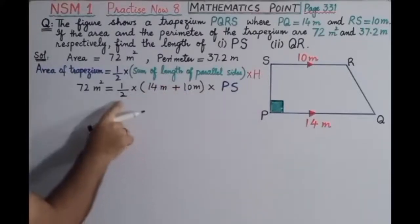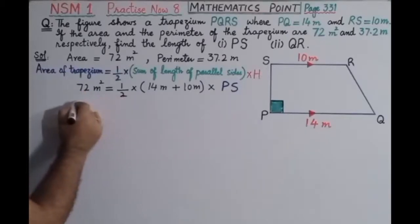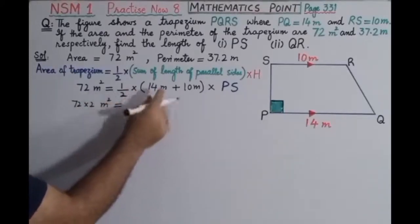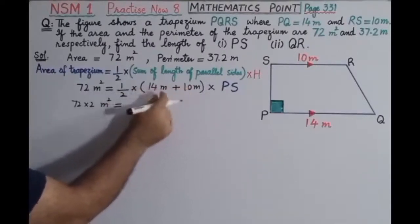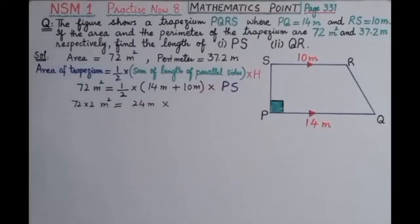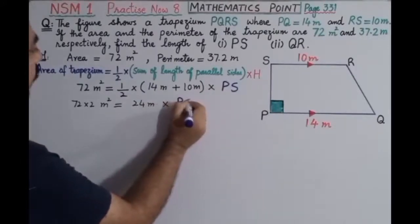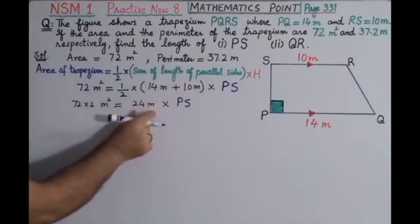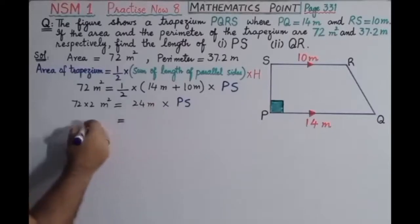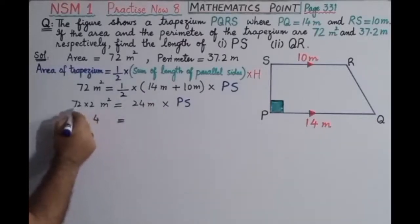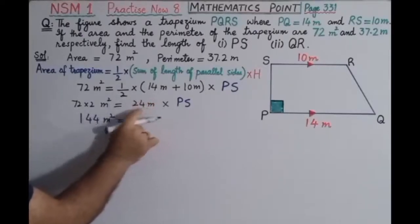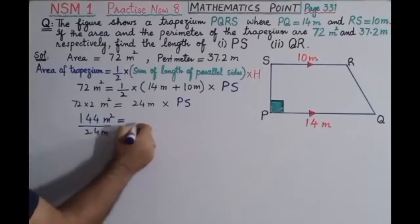Now we add these two values and multiply both sides by 2. So 72 multiplied by 2 gives 144 square meters, equal to 14 meters plus 10 meters, which is 24 meters, multiplied by PS. Dividing both sides by 24 meters, we get 144 square meters divided by 24 meters, which equals PS.